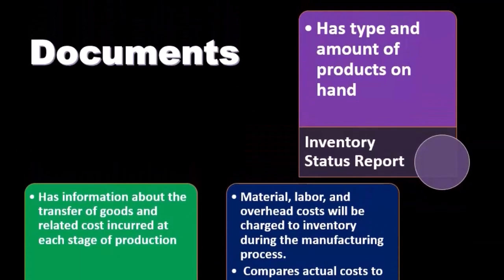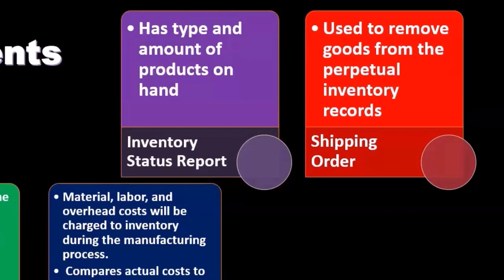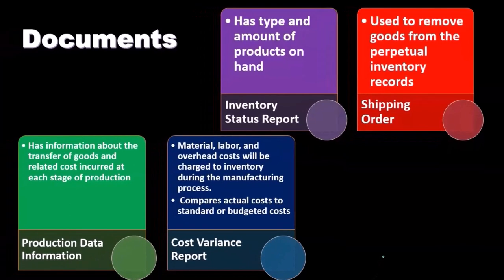The inventory status report includes the type and amount of products on hand. Then the shipping order is used to remove goods from the perpetual inventory records. When goods are going out — possibly because we sold them — the shipping order triggers the transaction removing the inventory from the business's books.